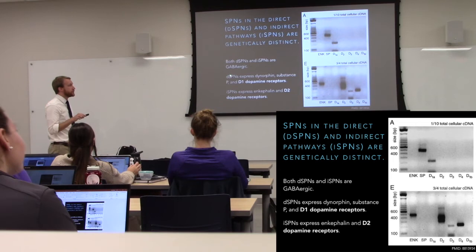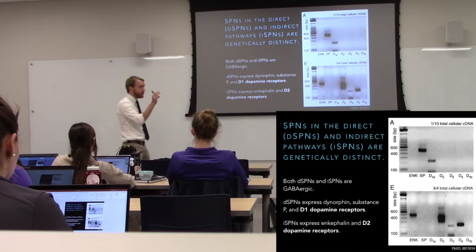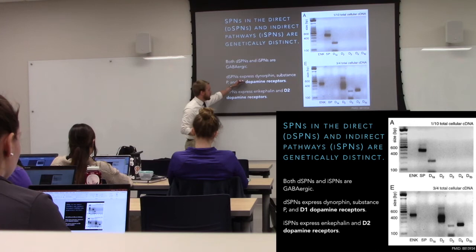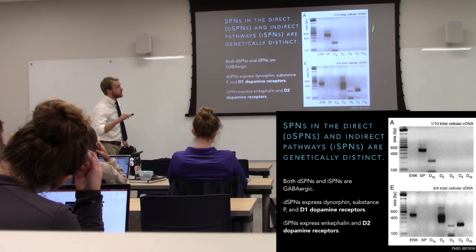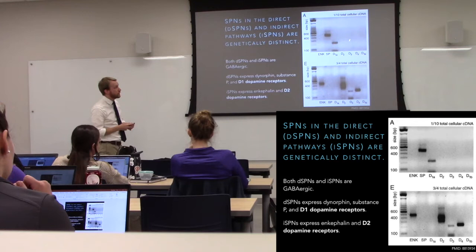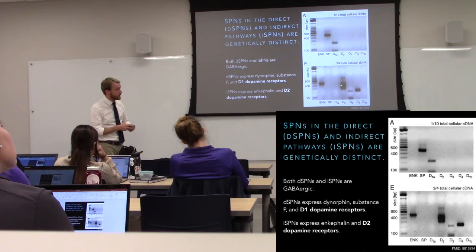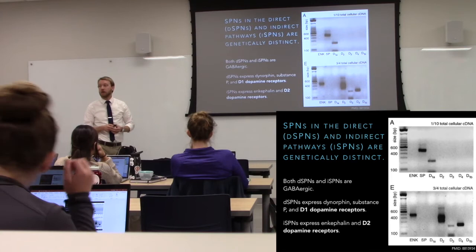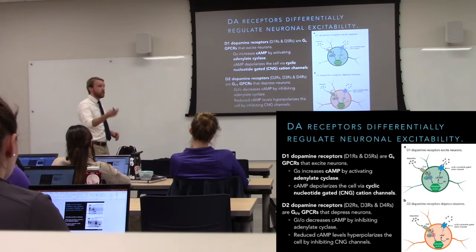The spiny projection neurons projecting on the direct pathway and indirect pathway have different types of dopamine receptors. The dopamine input from the SNc gives a little blast all throughout the striatum — both types are activated, both D1 and D2. Direct pathway spiny projection neurons express D1 but not D2, D3, or D4. Indirect pathway spiny projection neurons express D2-type dopamine receptors — D2, D3, and D4 are all Gi-coupled, the D2-class dopamine receptors. So dopamine is excitatory for direct pathway neurons and inhibitory for indirect pathway neurons.